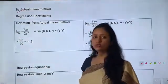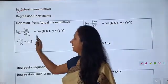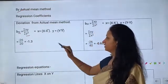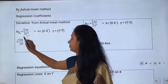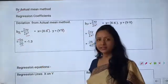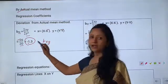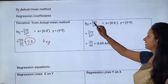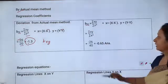The formula of the actual mean method: bxy = Σxy / Σy², where x = x − x̄ and y = y − ȳ. Σxy = −26 and Σy² = 20, so bxy = −26/20 = −1.3. Next byx = Σxy / Σx², which gives the same result as before.